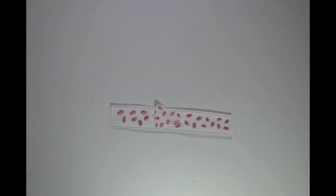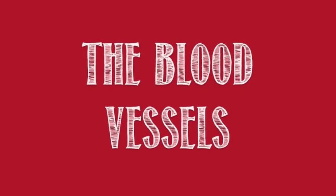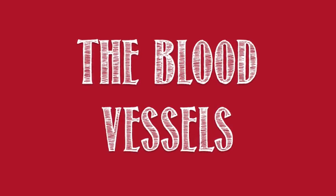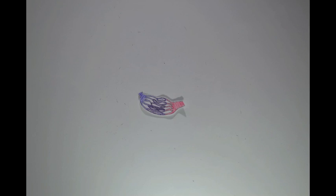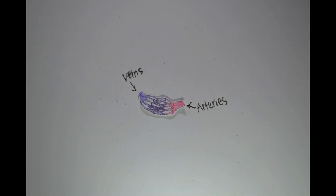Blood vessels help carry blood all around the body. There are three types of blood vessels: the arteries, which carry oxygenated blood away from the heart and to the body; veins, which carry the blood back to the heart; and capillaries, which connect arteries to veins.